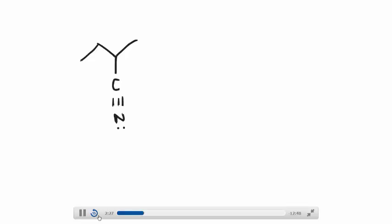Now we have our nitrile. This nitrile reacts very much like a carbonyl carbon would — it is a pseudo-carbonyl carbon. It has pi bonds to an electronegative atom. It's not oxygen, it's nitrogen, but it still has pi bonds to an electronegative atom. And you've got protons in solution; you've got an acid. Acids are going to donate protons to an electronegative atom — in this case, nitrogen.